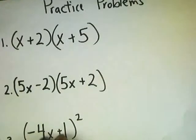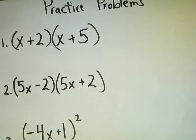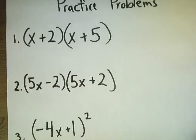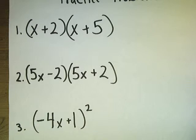Here they are. The first practice problem says the quantity x plus 2 times the quantity x plus 5. The second one says the quantity 5x minus 2 times the quantity 5x plus 2. And the last one says the quantity negative 4x plus 1 squared. So if you are in charge of the classroom right now, please pause the video. I'm going to let the video sit there quietly for a few minutes to give them time. I'm just going to try to shut up. Then I'm going to come back and give you a chance to go over them.